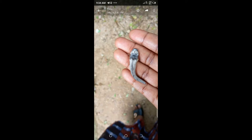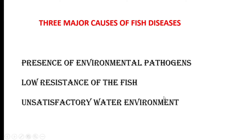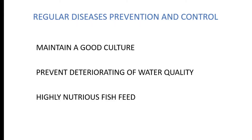Let's look at the general causes of fish diseases. There are three major causes: number one, presence of environmental pathogens; number two, low resistance of the fish stocked, that is poor feed formulation; and number three, unsatisfactory water environment. We have regular disease prevention and control practices to prevent and control fish diseases.